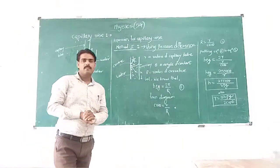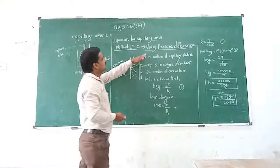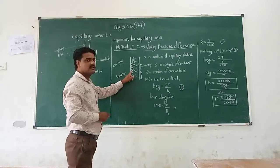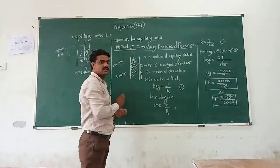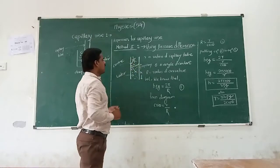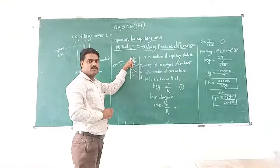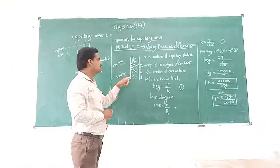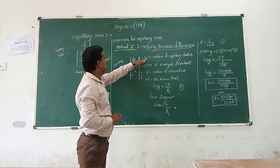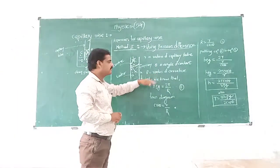To obtain an expression for capillary rise, the first method is using pressure difference. Looking at the cross-section of the capillary, as water rises to height h, if we draw the tangent at that part, theta is the angle of contact, small r is the radius of the capillary tube, and capital R is the radius of curvature of the meniscus.